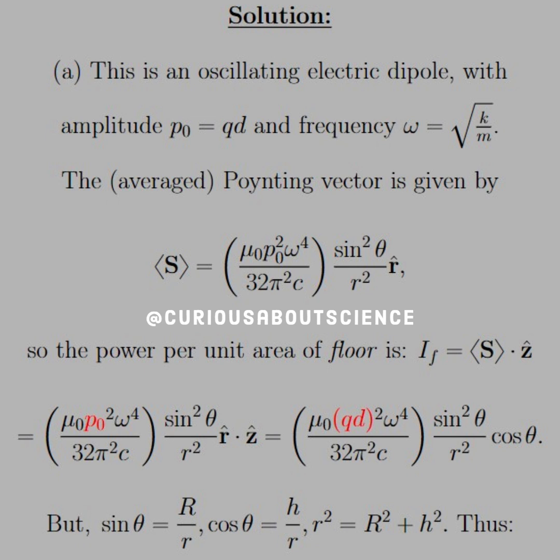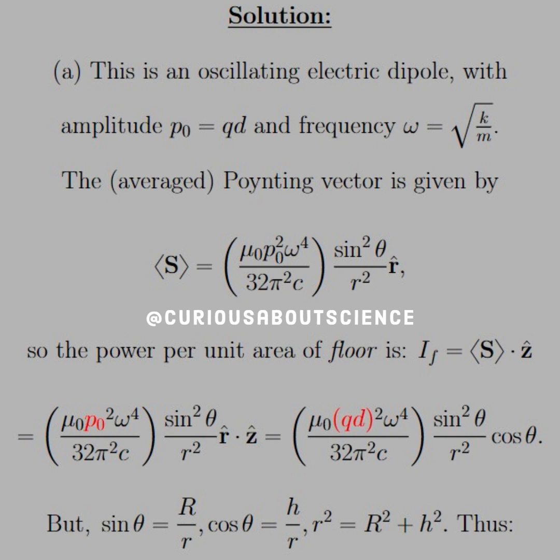Now we can plug everything in. P naught is equal to QD, so we plug it in as we see in the red. We simplify in the next page with taking the components and squaring them separately. We plug in the definitions for sine squared and cosine, ending up with the constants in parentheses followed by R squared times H over big R squared plus H squared to the five halves power.